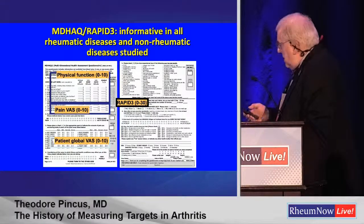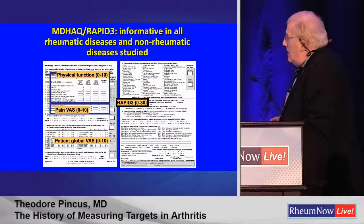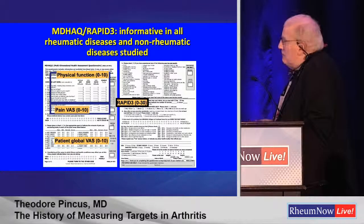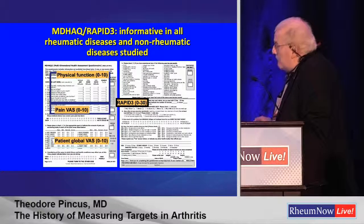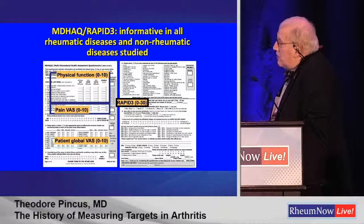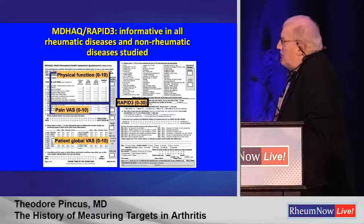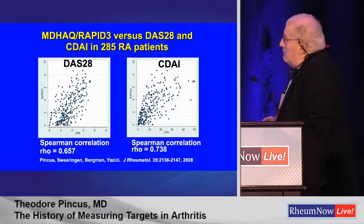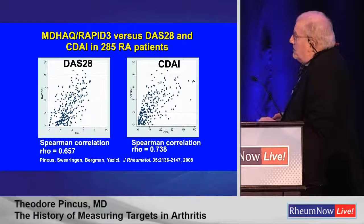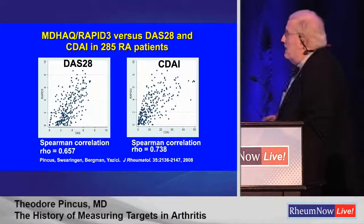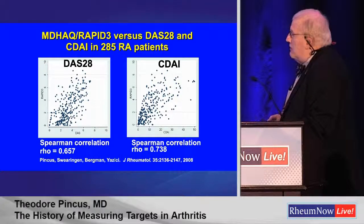So this is RAPID-3. I'd like to think this is kind of old hat in rheumatology. The literature says that it's relatively widely used now. A lot of people only use RAPID-3 and I think that's an error. We have never written about RAPID-3 without the rest of the MDHAC. We have published extensively the correlations with DAS-28 and CDI — you essentially get the same information.